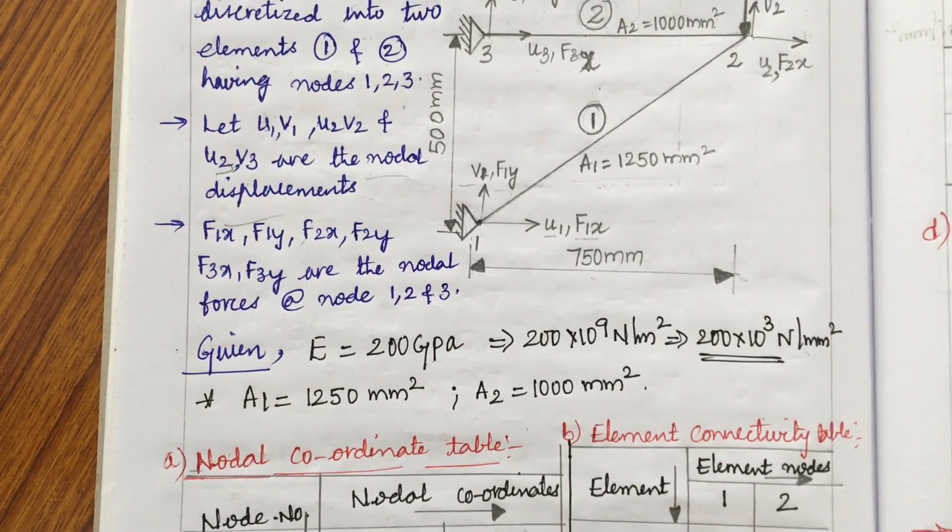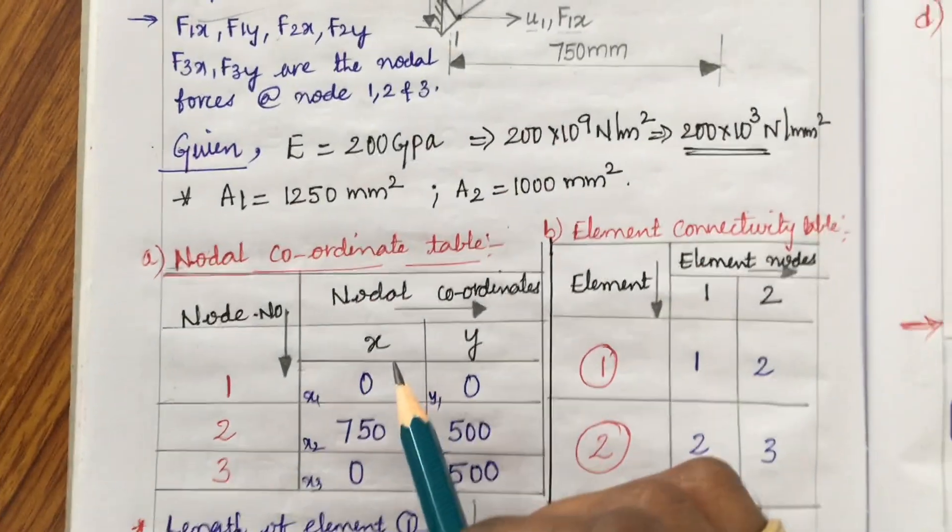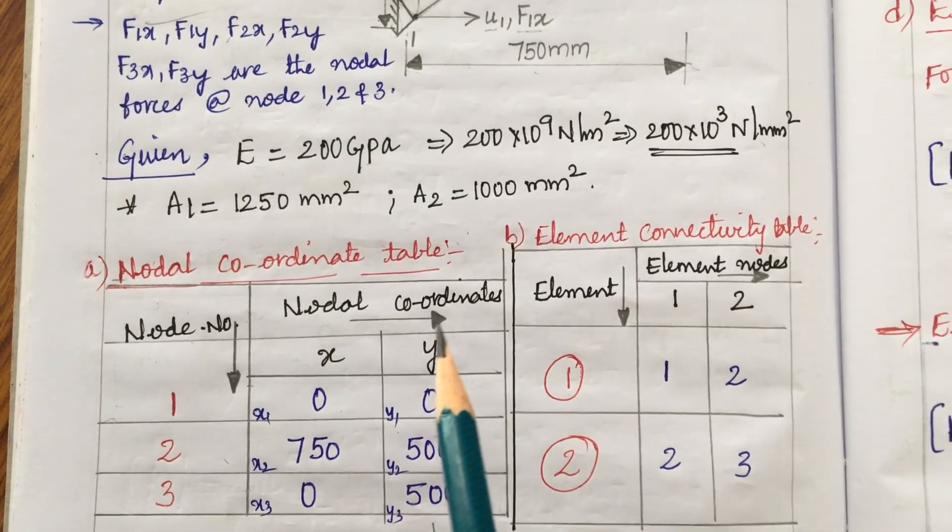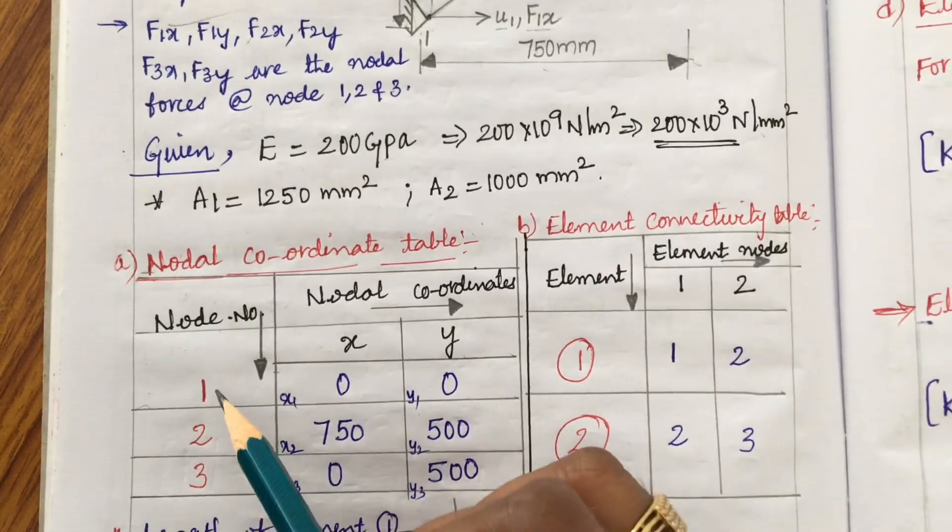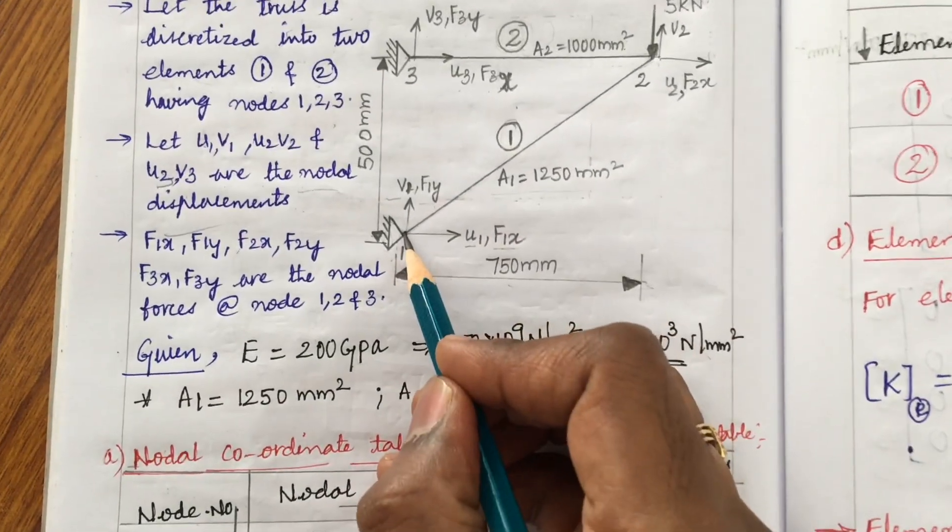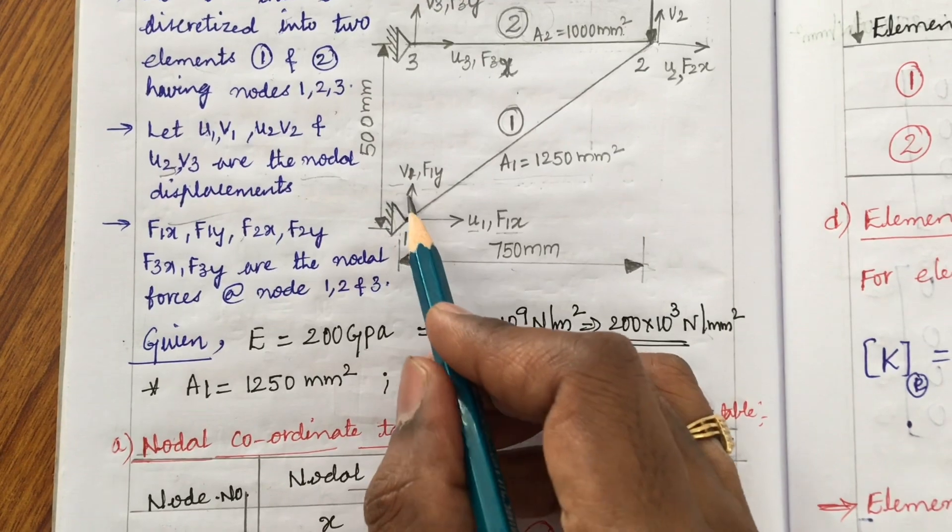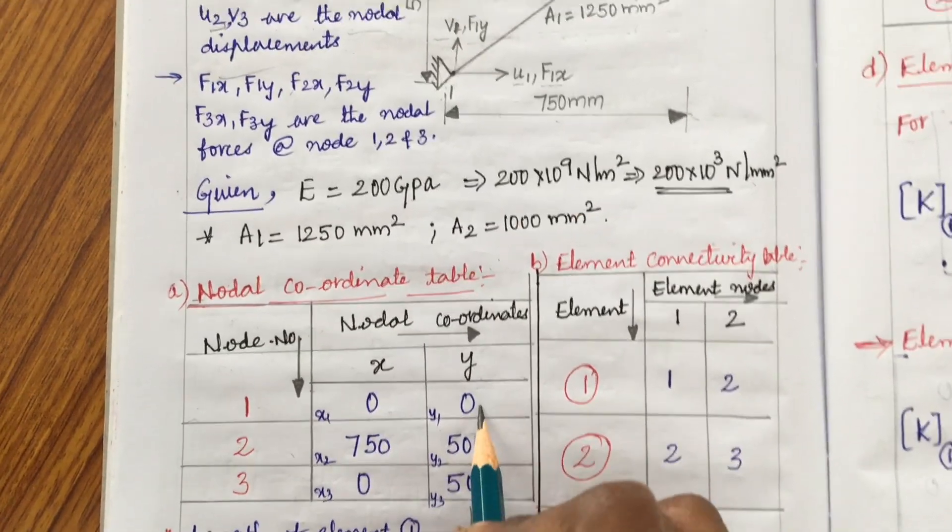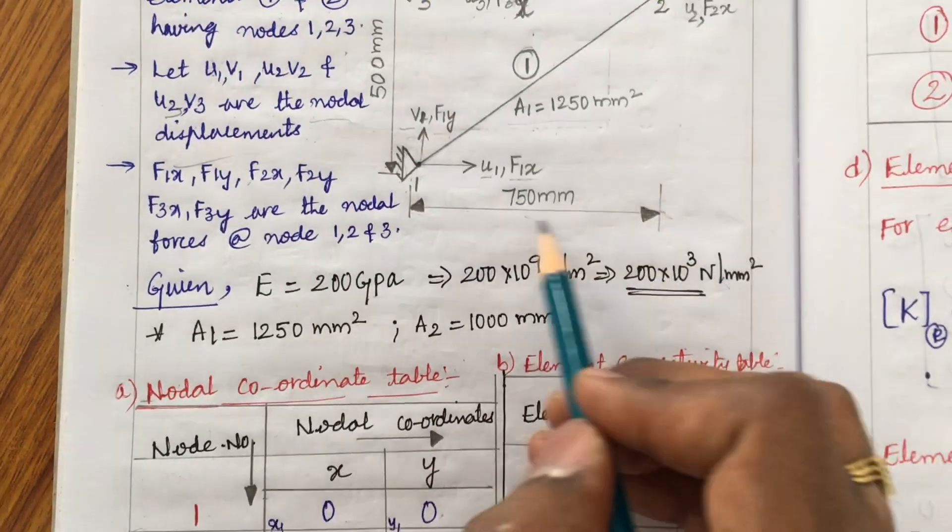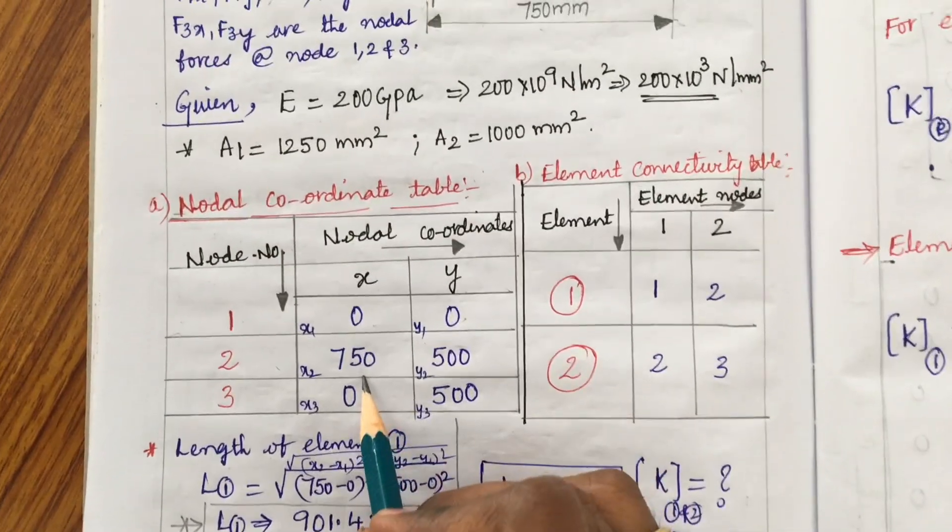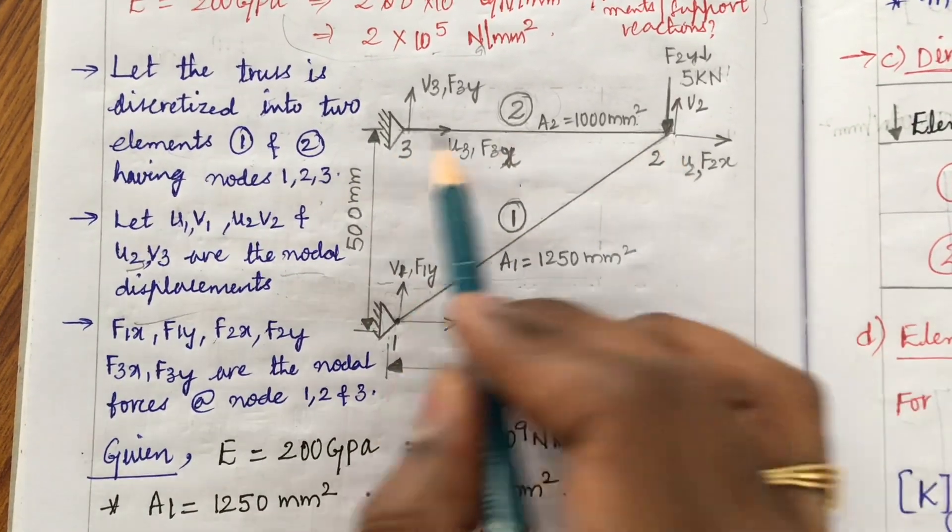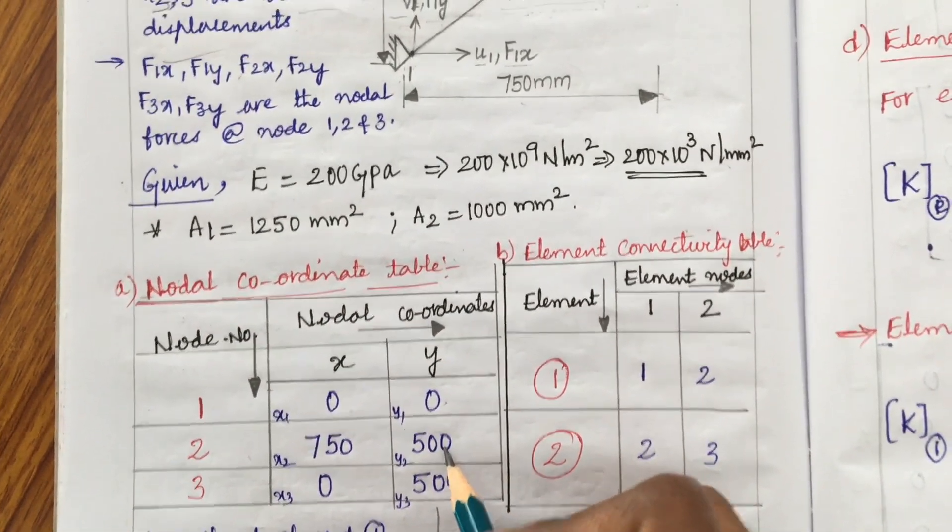The first and foremost thing: we have divided this into two elements and the nodes are 1, 2, 3. U1, V1 to U3, V3 are nothing but the nodal displacements. F1x to F3x and F3y are nothing but the nodal forces at nodes 1, 2, 3 respectively. First, we need the nodal connectivity table and element connectivity table.